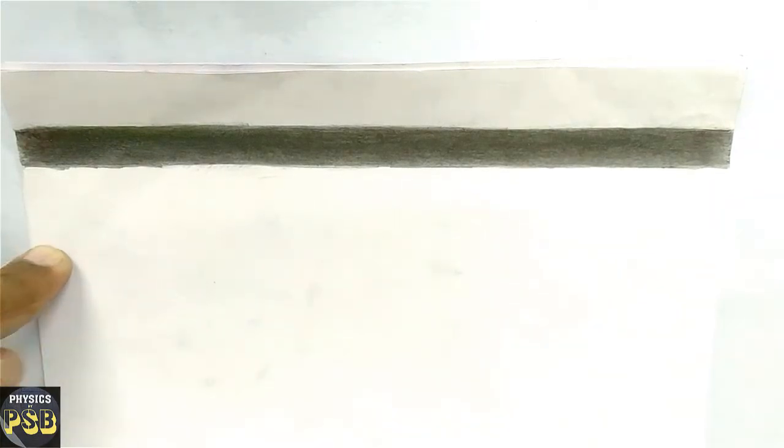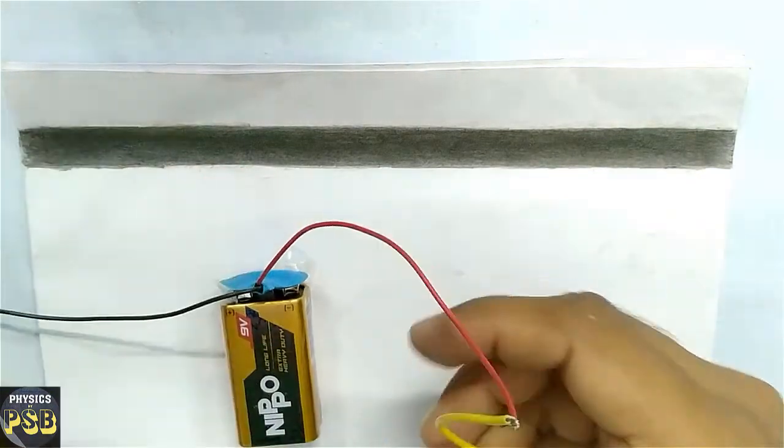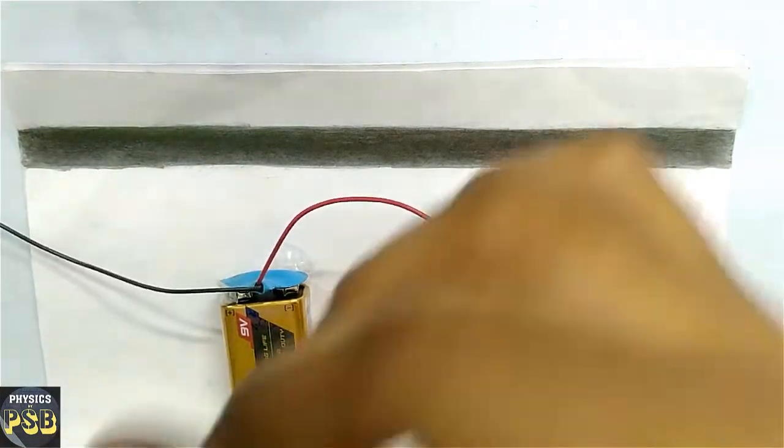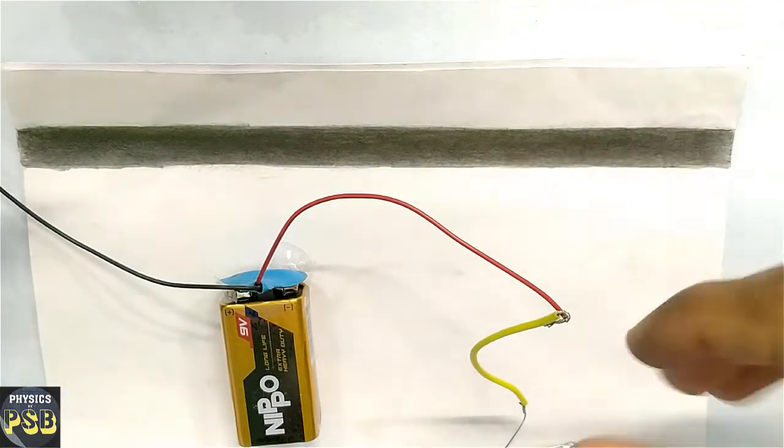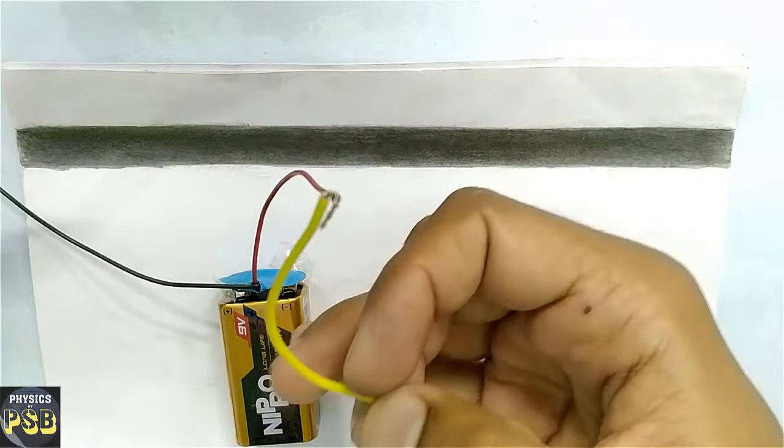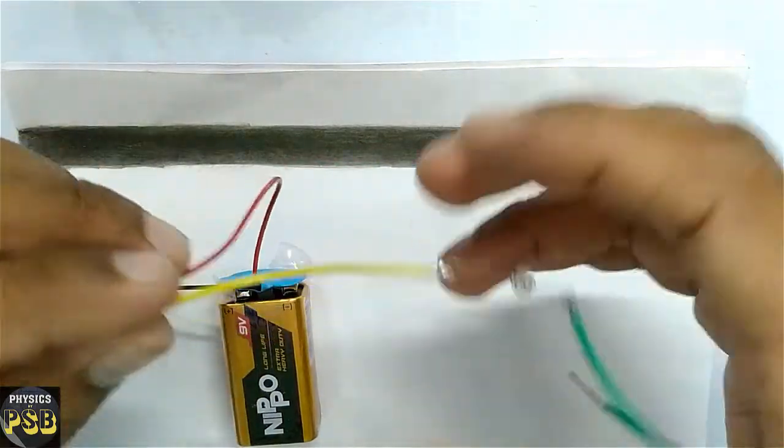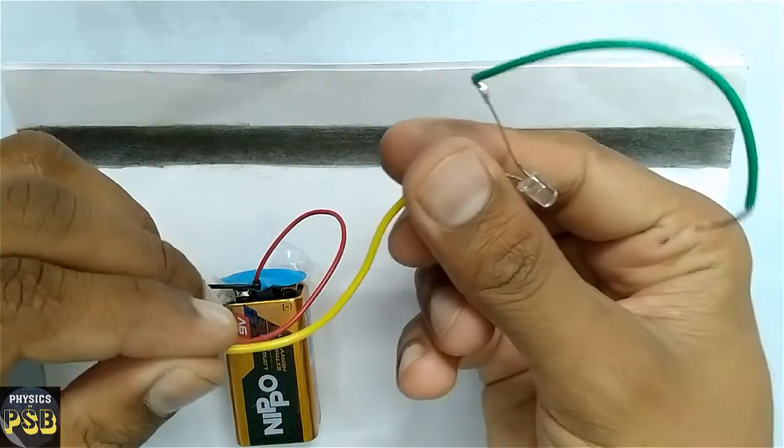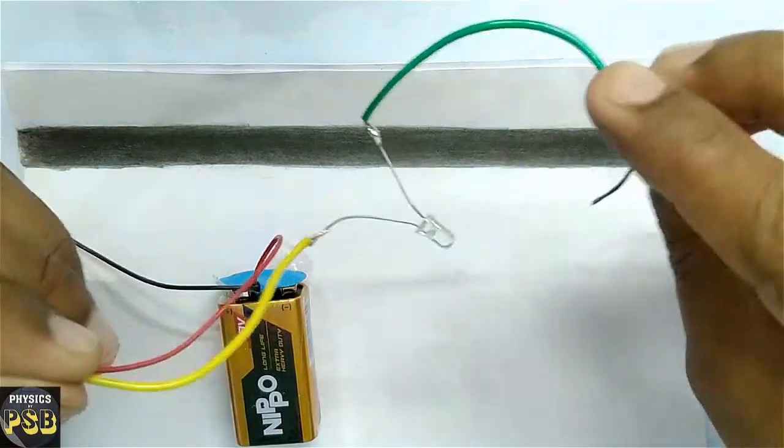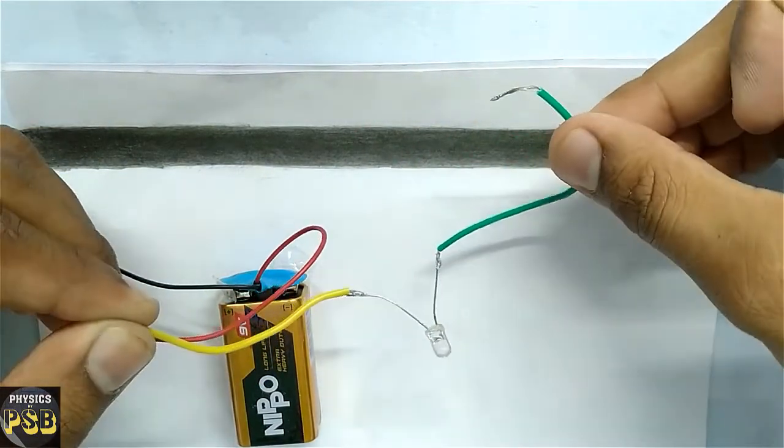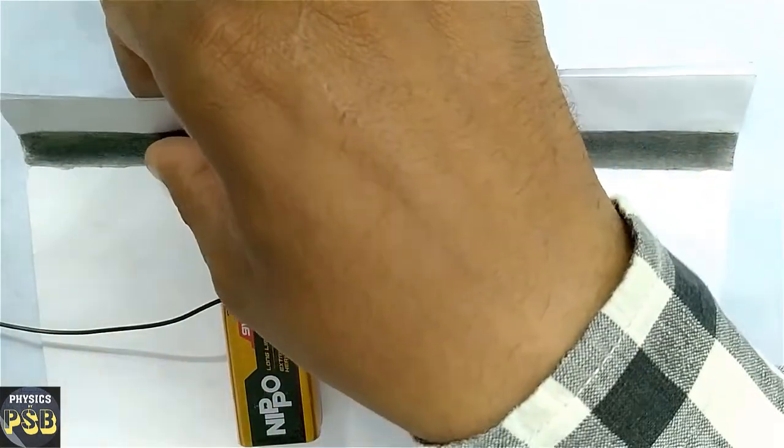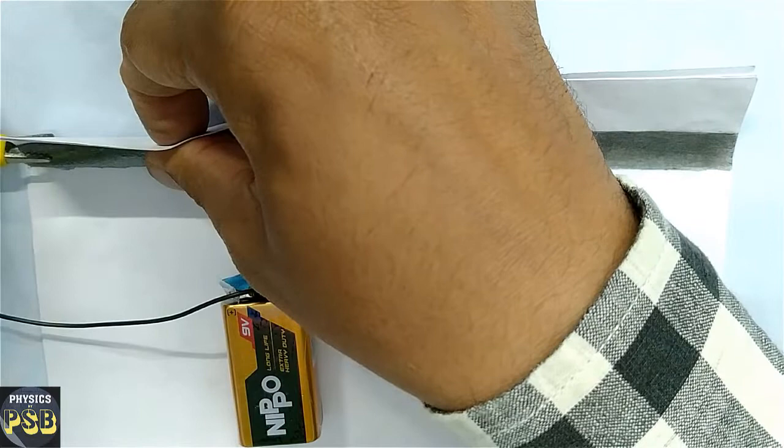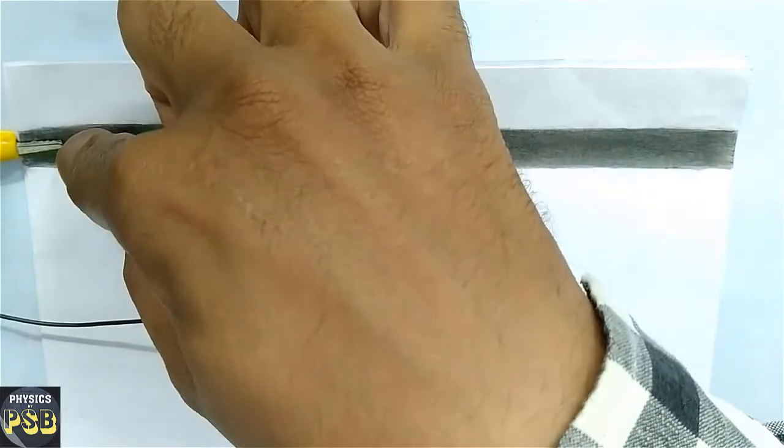Now I will take a 9-volt battery. I will connect the negative end to a crocodile clip, and the positive end of this battery is connected to the anode of an LED. The cathode of the LED is left as such. Now I will connect the negative terminal of this battery to one end of this track.